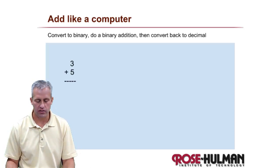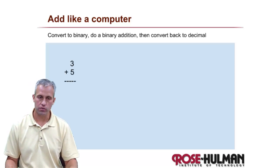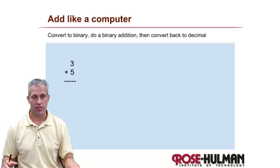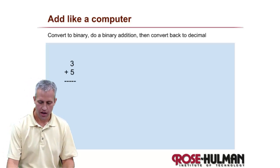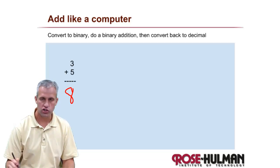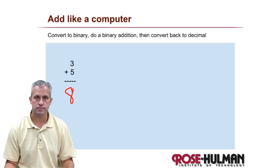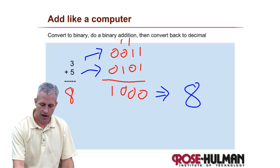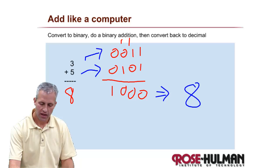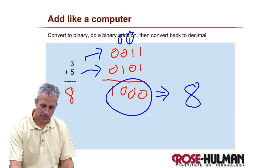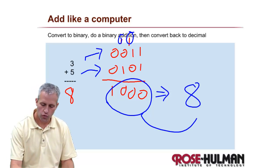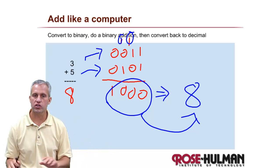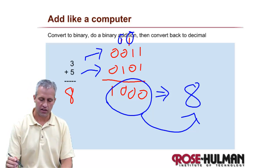Let's do some practice. See if you can add these like a computer would: first convert them to binary, then add them as two binary numbers, then convert the result back. It should be eight. So three in binary is 0011, five in binary is 0101. If you add them up, you get carries, and you get the result in binary, which of course is 8. That's how a computer does math — it doesn't work with decimal at all. A computer at the low level doesn't even understand decimal; it does everything in binary.